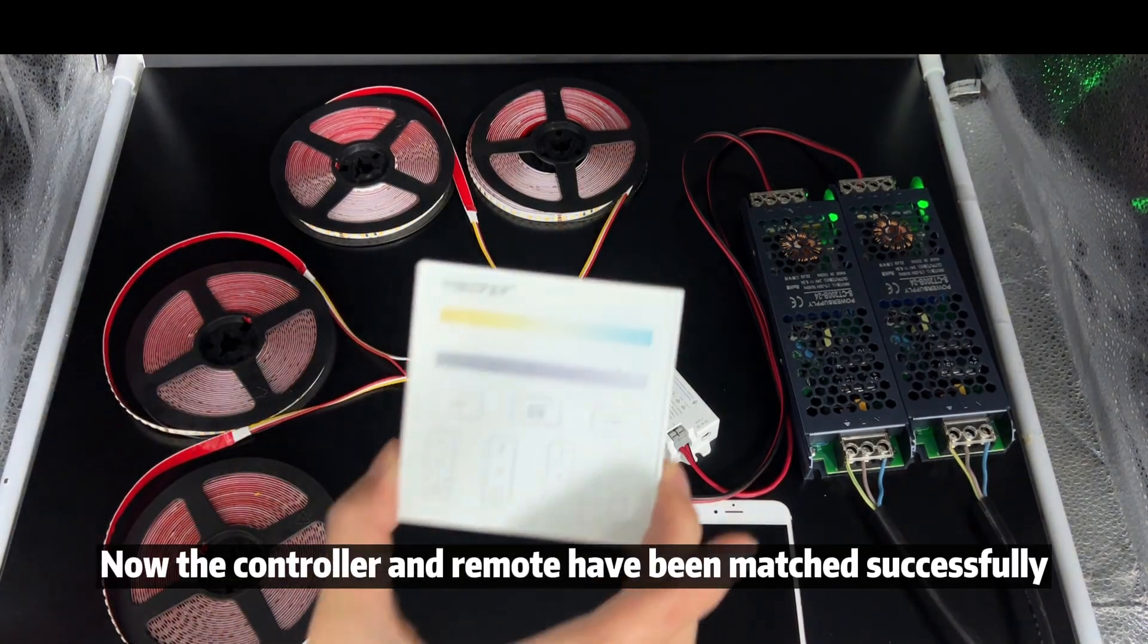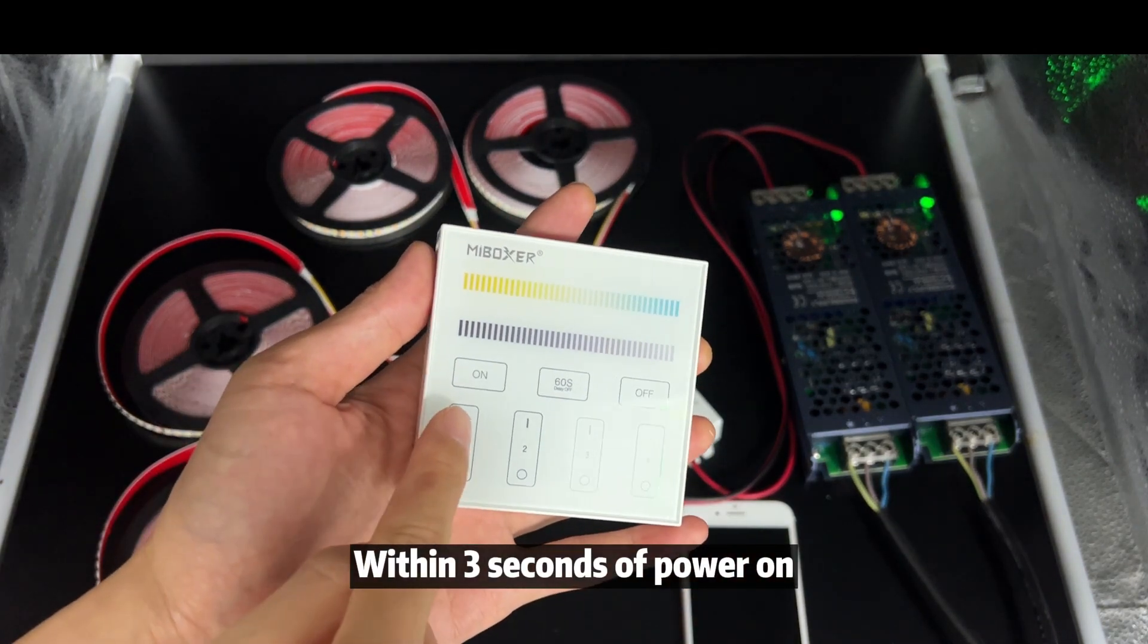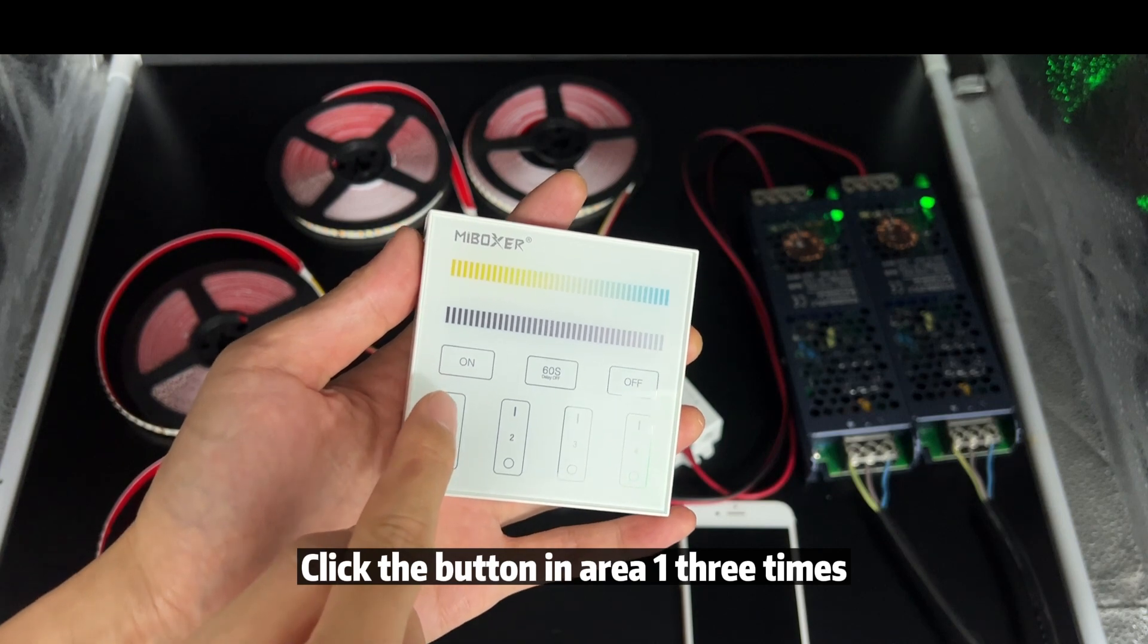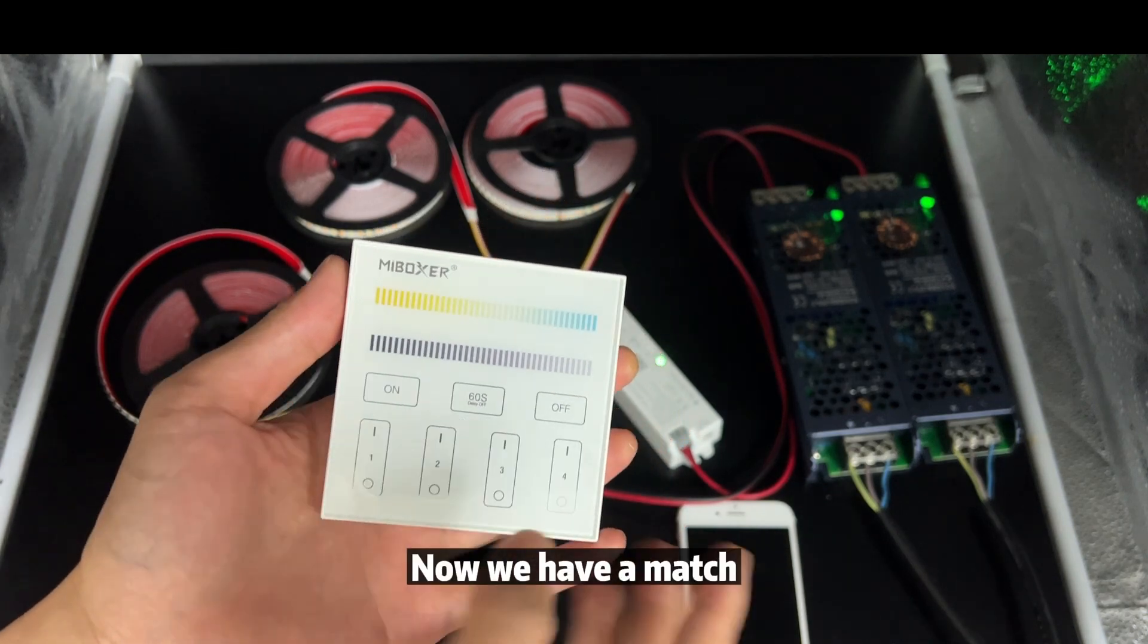Now the controller and remote have been matched successfully. The matching method for this remote is within some seconds of power on, click the button in area A five times. Now we have a match.